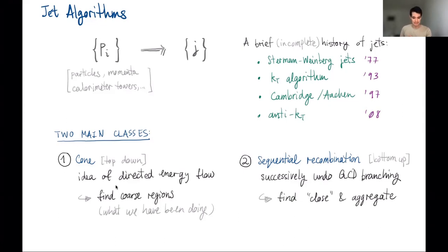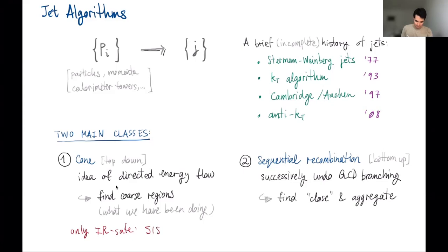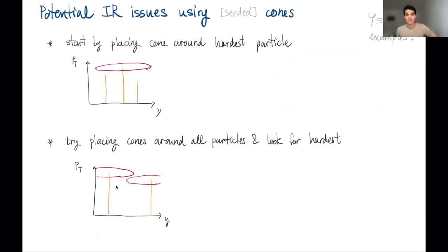As already mentioned, cone algorithms have an issue with infrared safety. To my knowledge, all cone algorithms are basically infrared unsafe, with the exception of one — the so-called SISCone algorithm, which is the only infrared-safe cone algorithm I know of. All others are plagued by infrared safety issues, and all recent jet definitions are entirely based on sequential recombination algorithms. Let me highlight what problems arise with seeded cone algorithms in particular.